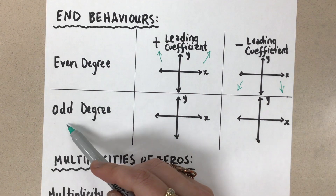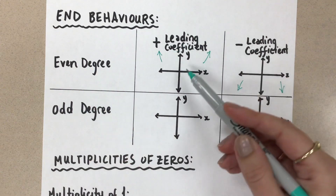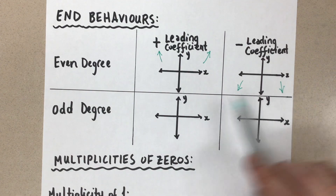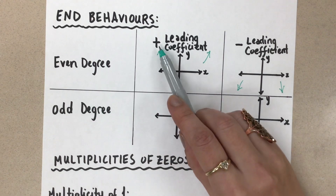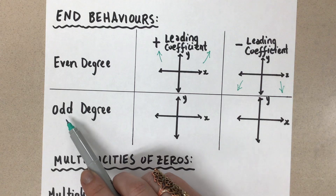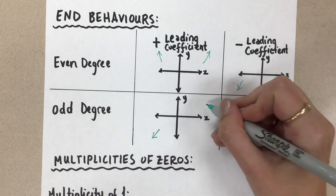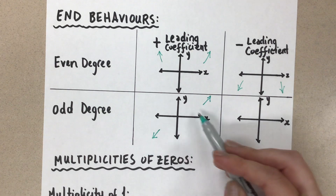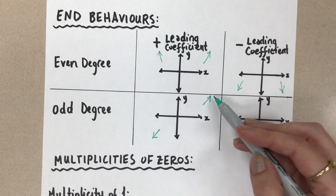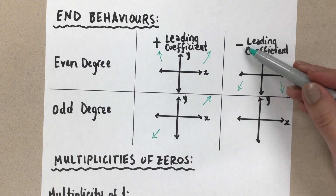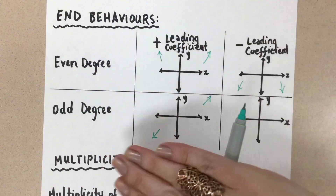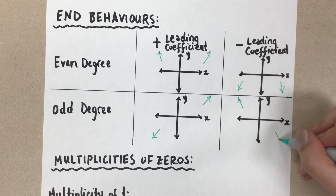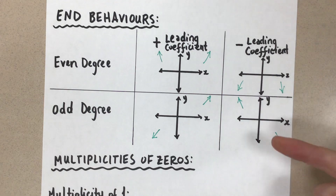If you have a polynomial function with an odd degree, the end behaviors go in opposite directions — unlike even degree where both go the same way. With a positive leading coefficient and an odd degree, as x approaches negative infinity y approaches negative infinity, and as x approaches positive infinity y approaches positive infinity. If the leading coefficient is negative with an odd degree, this flips over as a vertical reflection, giving the opposite behavior.